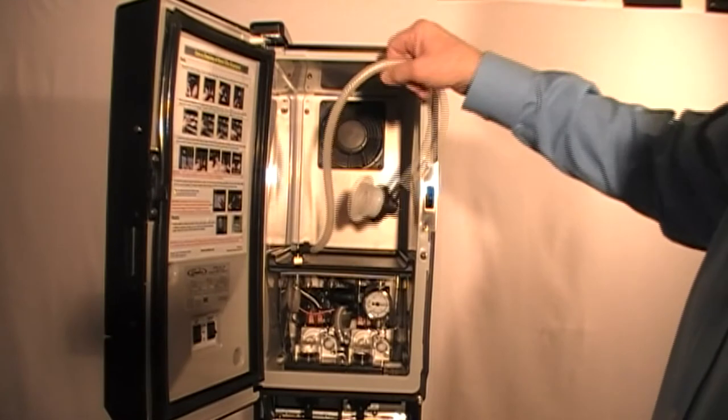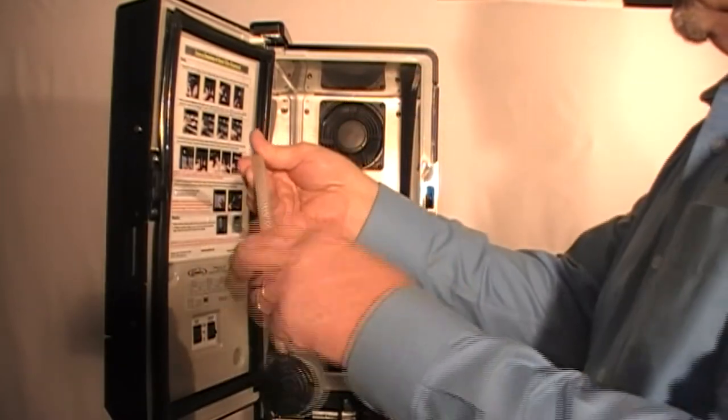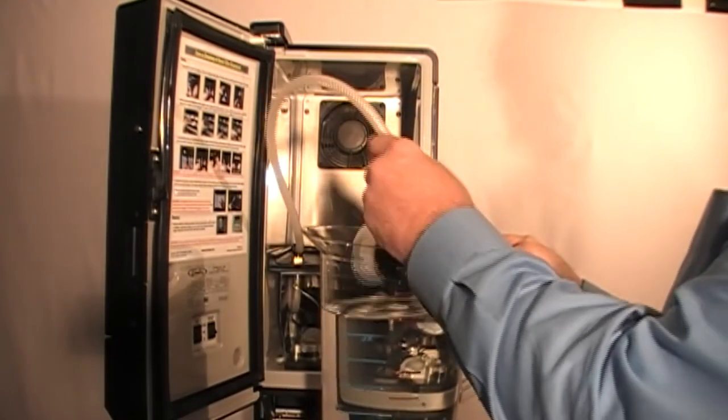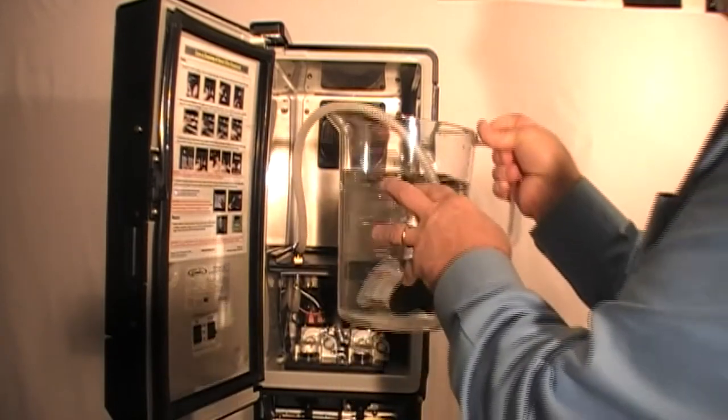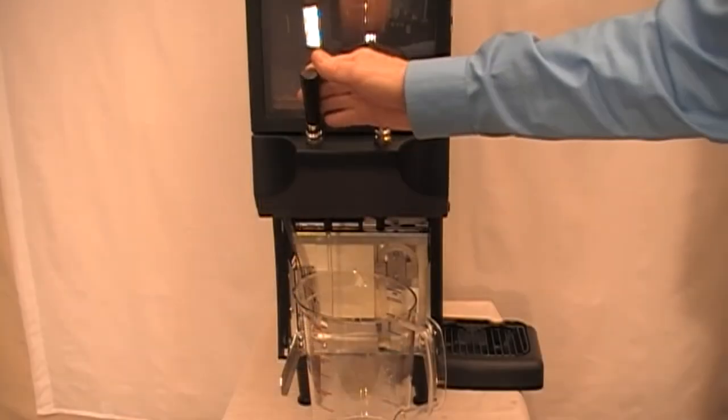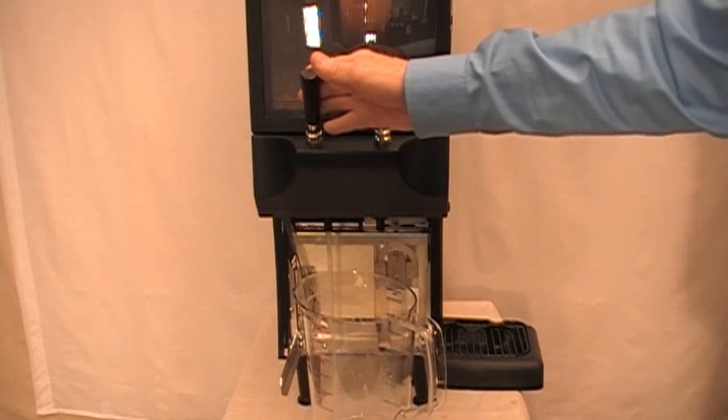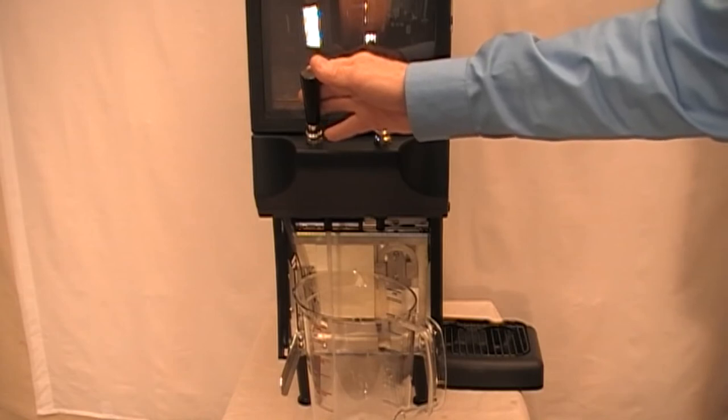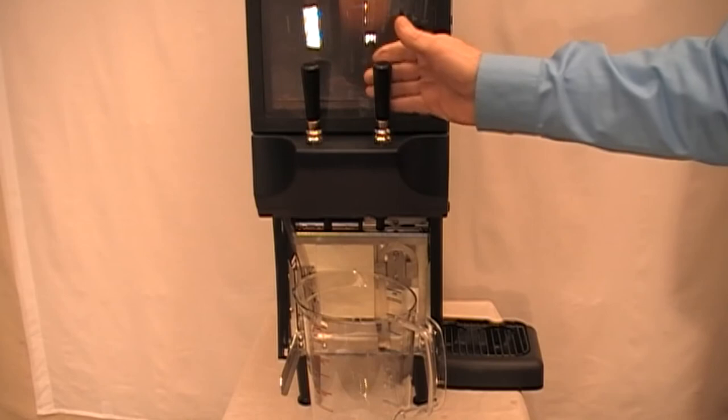submerge the bib adapter into the container and place inside cabinet and close the door. Make sure both red shipping plugs in the nozzles have been removed. Now dispense a quarter of a gallon of sanitizer from each dispense tap and then allow the sanitizer to soak for 20 minutes in system.